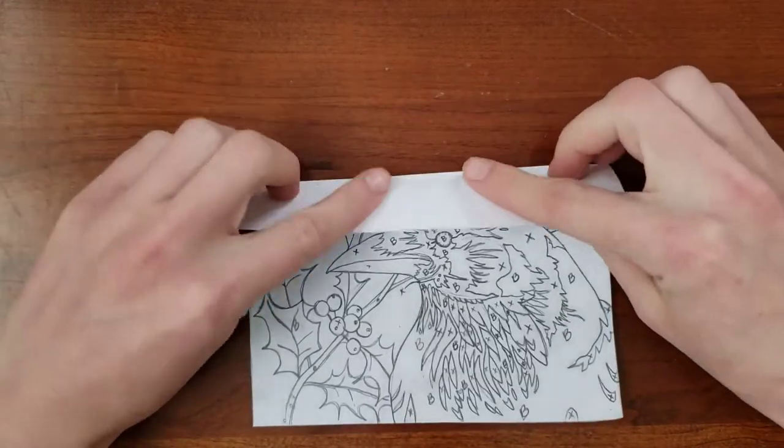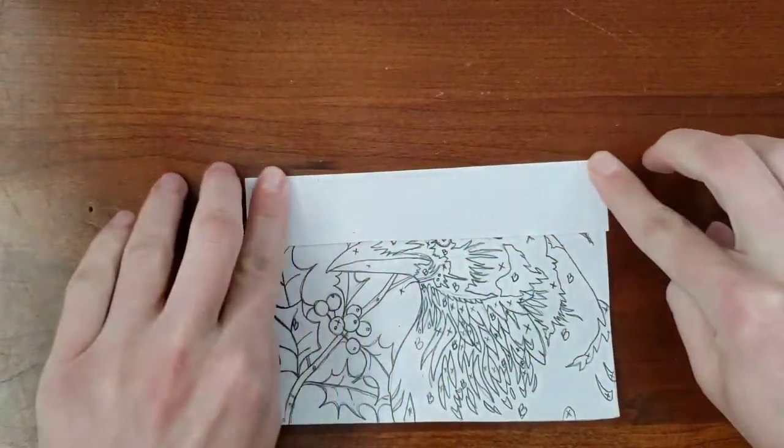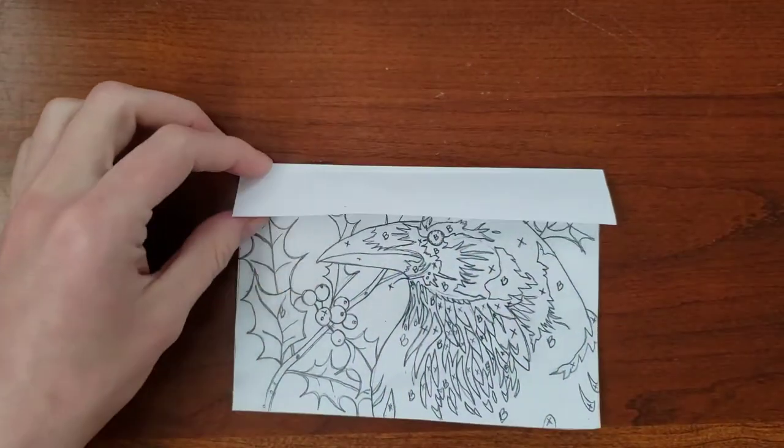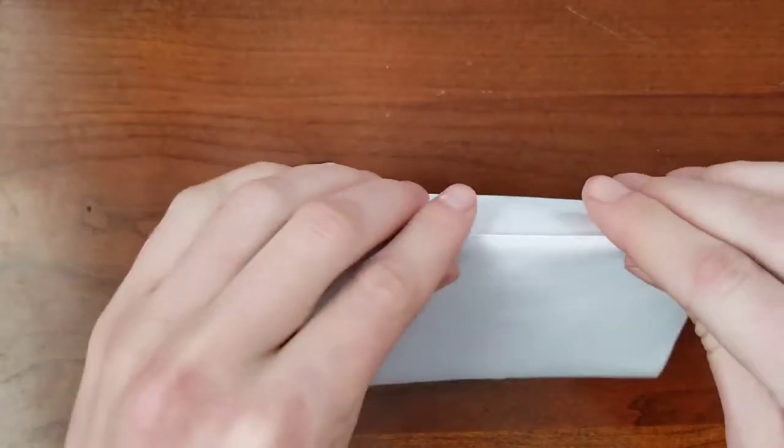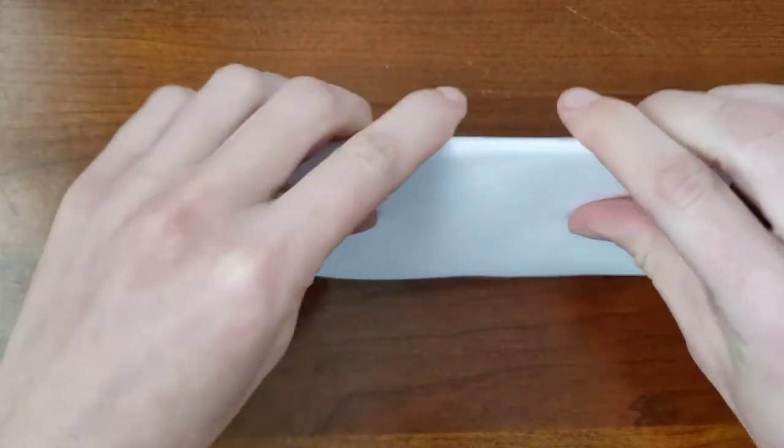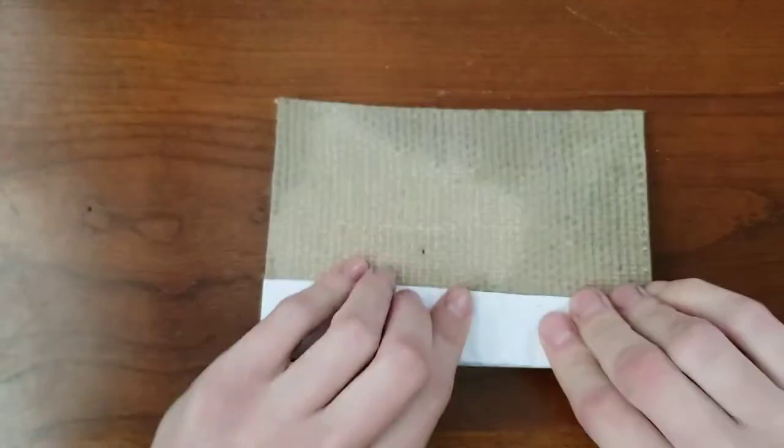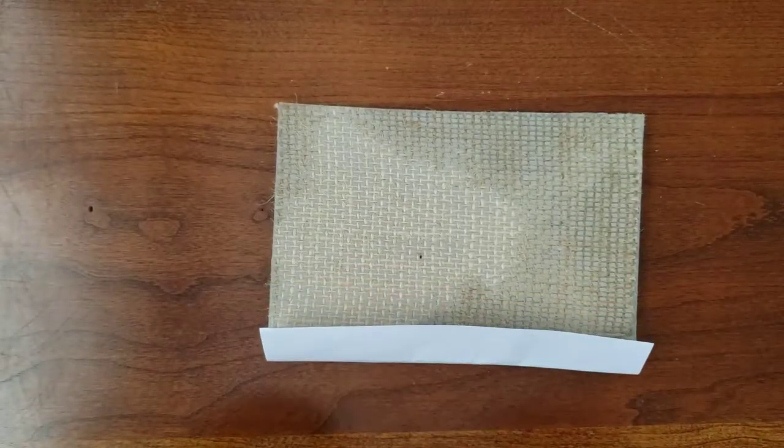Cut out your drawing so there are a couple extra inches along one of the longer sides. Fold this over to make a hinge. Lay the drawing face down on the linoleum and fold the hinge over the side of the block. Tape it to the back.